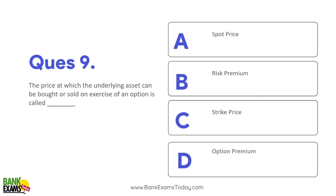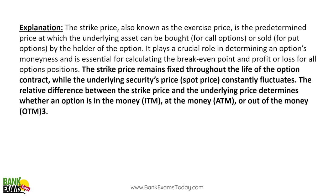Question 9: The price at which an underlying asset can be bought or sold on exercise of an option is called the strike price. On the expiry date, the rate at which you can buy or sell the underlying asset — for example, Nifty 50 lots — is the strike price. Strike price remains fixed throughout the life of the contract while the underlying security's price keeps changing.